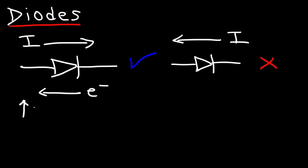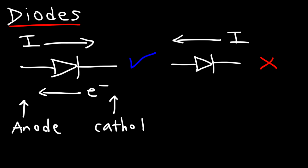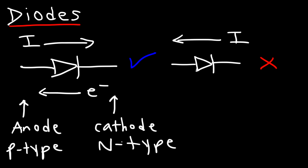The left side of this diode is known as the anode and the right side is known as the cathode. The anode consists of p-type semiconductor material and the cathode consists of n-type semiconductor material. If you apply the positive terminal of the battery to the anode and the negative terminal to the cathode, the diode will conduct if the voltage across it is greater than 0.7 volts.